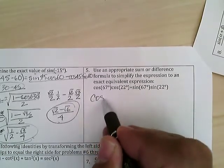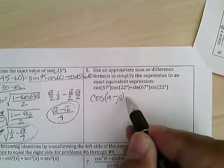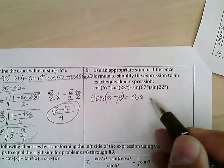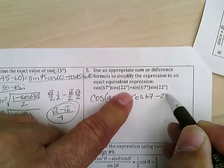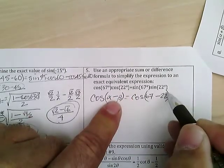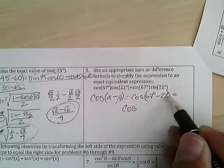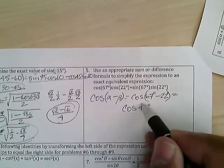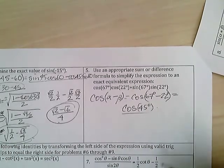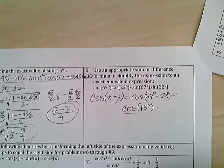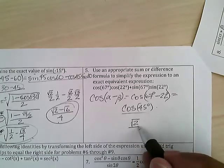Cosine·cosine + sine·sine is the cosine of (angle minus angle). So this would be cosine(67 - 22) = cosine 45. Many of you got four points for that, and some got bonus points for going one step further: cosine 45 = √2/2.